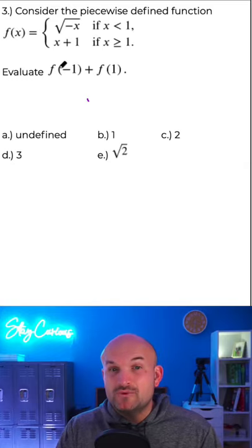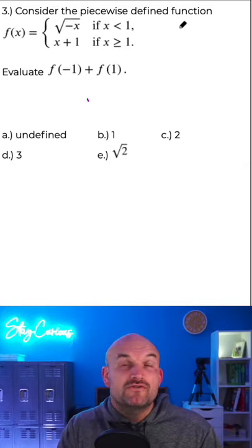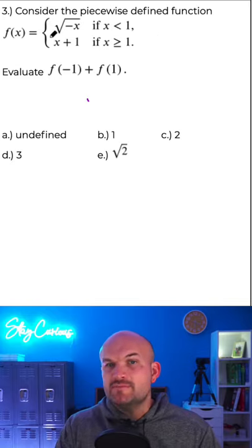So to evaluate f of negative 1 and f of 1, we need to know when this function is defined for both of those values. And we're going to do that by using the restrictions of the piecewise function.